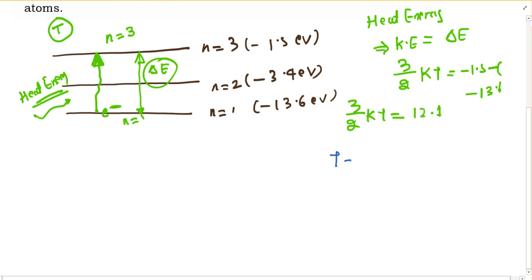So T equals 12.1 times 2 divided by 3k, where k is 8.62 times 10 to the minus 5 electron volts per Kelvin. This gives T equals 9.4 times 10 to the 4 Kelvin.